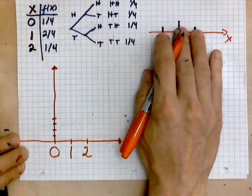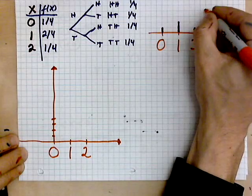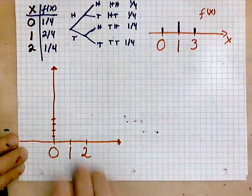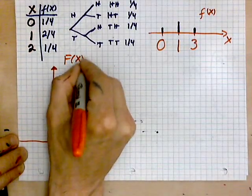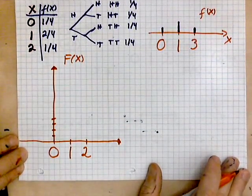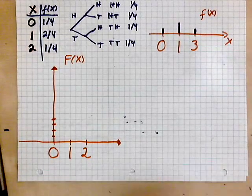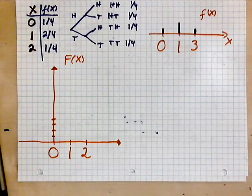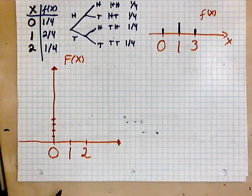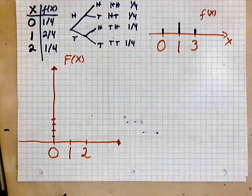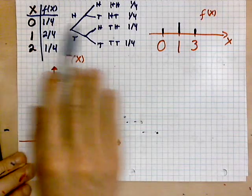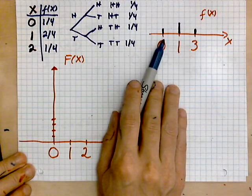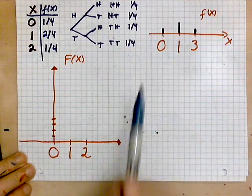So what you see plotted where I'm pointing now, that is little f. What we are about to plot is big F. How do we do it? We count up. To the left of zero, there is no probability present, and you can see also in the graph, no probability, no little bars to the left of zero.